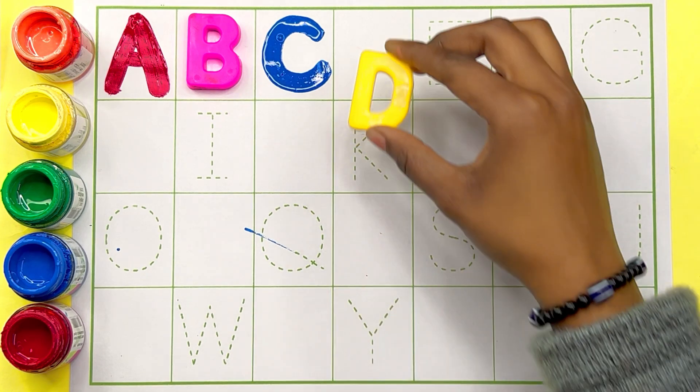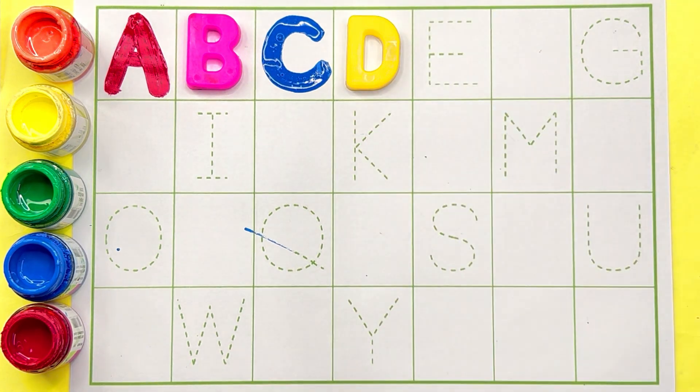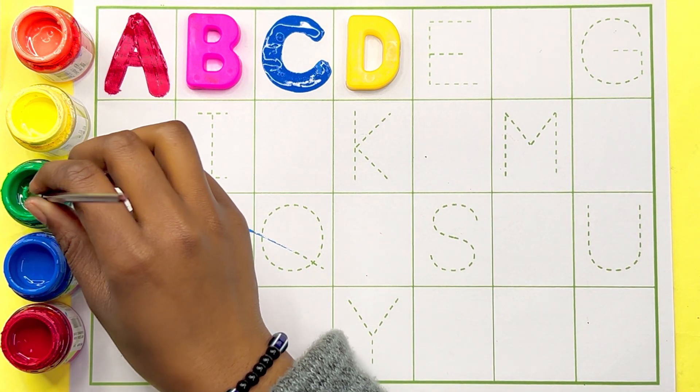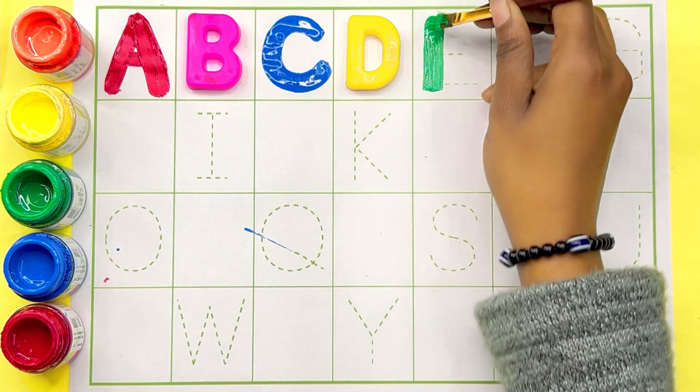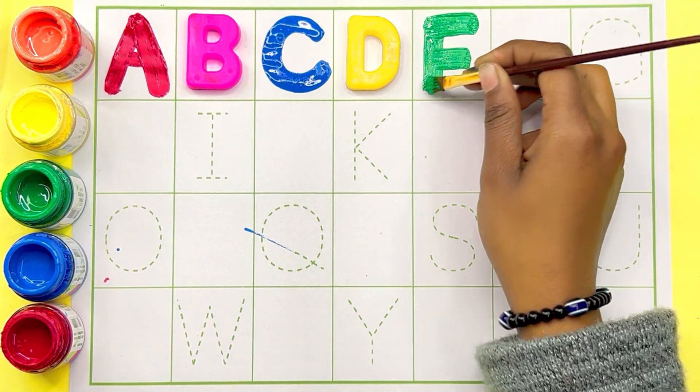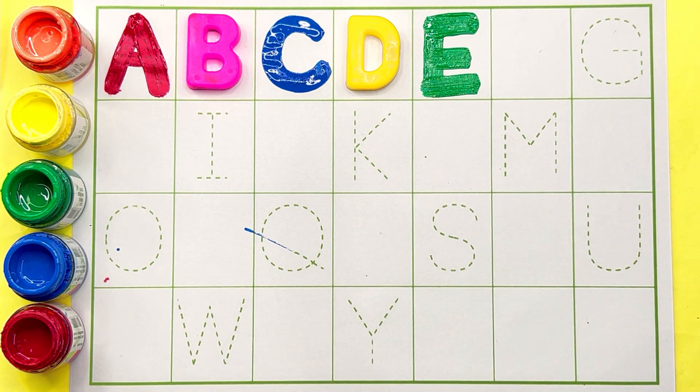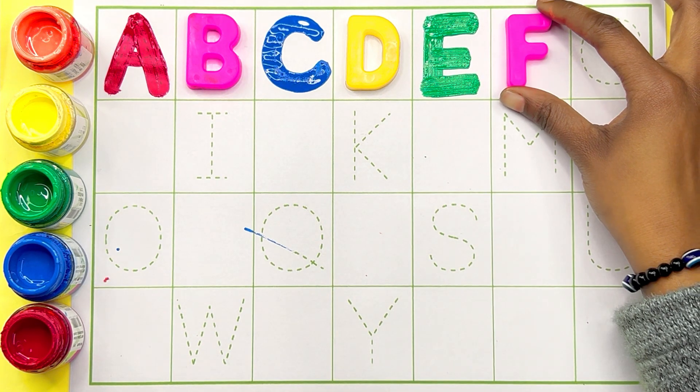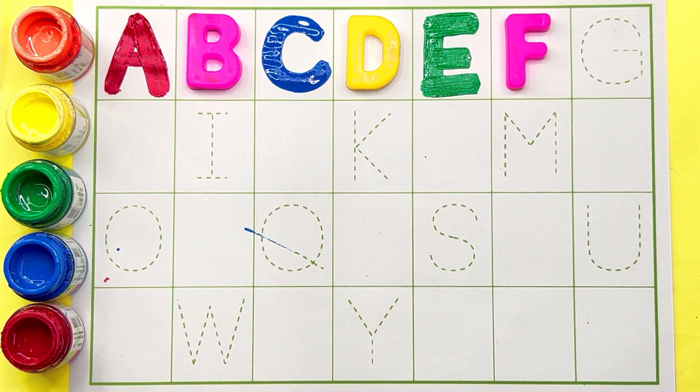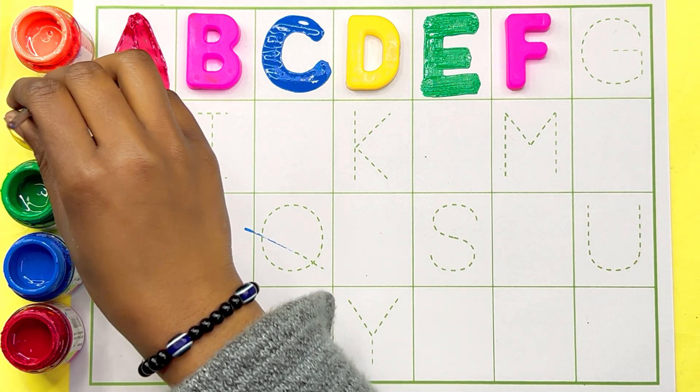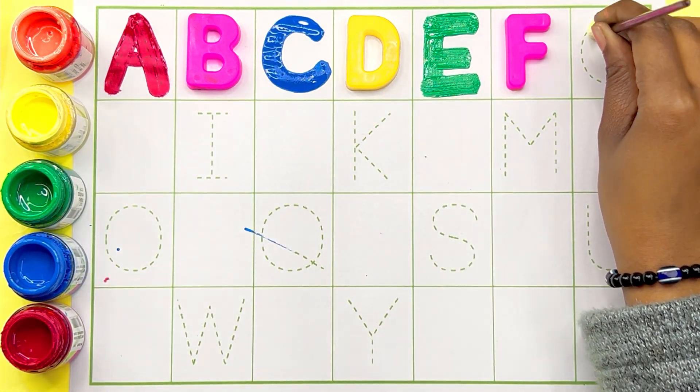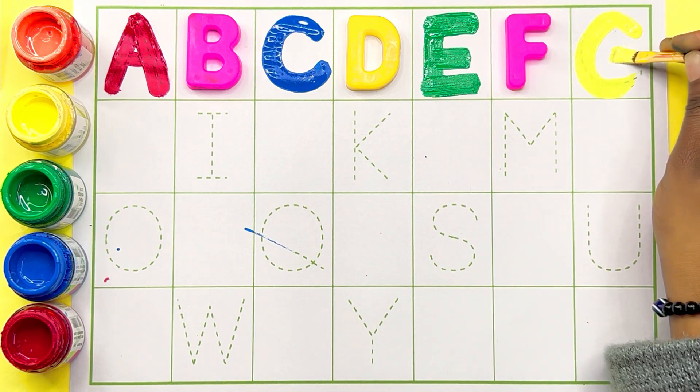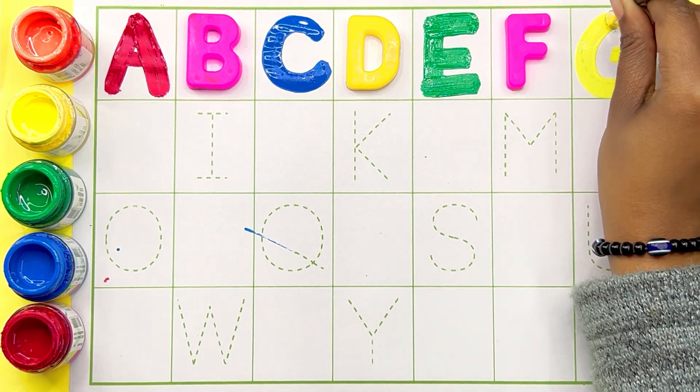Letter D, D for diamond. Green color E. E for elephant.